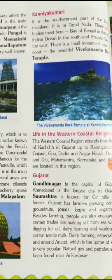Now we will know about Kanyakumari. As you know, children, Kanyakumari is the southernmost part of the Indian mainland. It is in Tamil Nadu. Three water bodies meet here — the Bay of Bengal in the east, the Indian Ocean in the south and the Arabian Sea in the west.